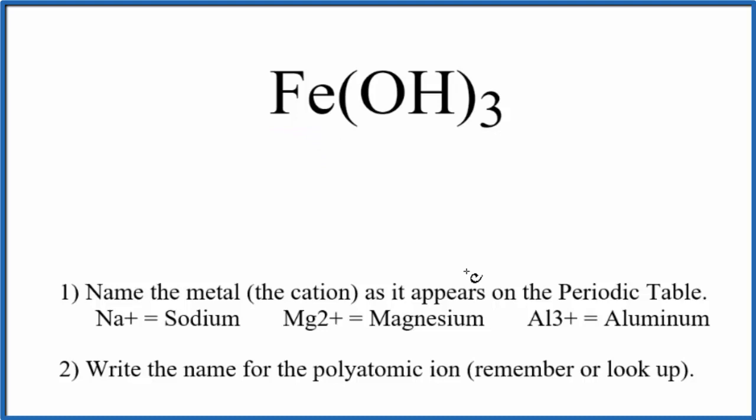So because of this, we're going to use these rules here to write the name for Fe(OH)₃. First, we're going to write the name for the metal. That's Fe, which is just iron.